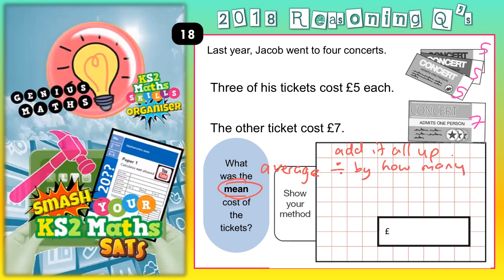So it's the total of everything shared equally by how many there are. We basically need to do 5 plus 5 plus 5 plus 7, and then because there are four tickets, we divide all of that — the answer to 5 plus 5 plus 5 plus 7 — by 4.